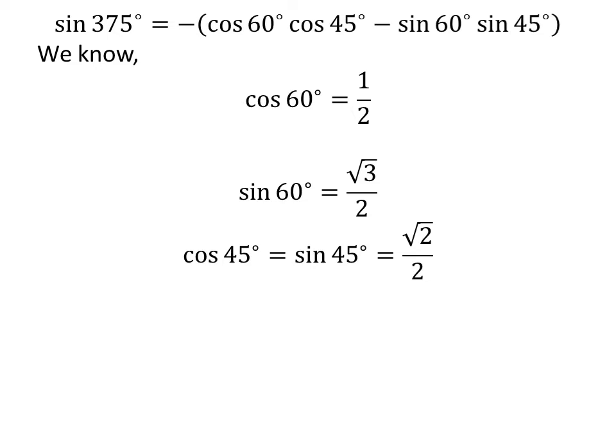As we know, cosine of 60 degrees is equal to one half. Sine of 60 degrees is equal to square root of 3 over 2. And cosine of 45 degrees is equal to sine of 45 degrees, which is equal to square root of 2 over 2. So we plug in these values in the above equation.